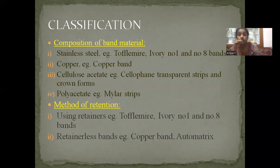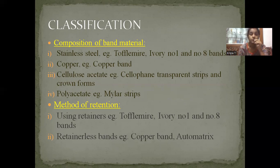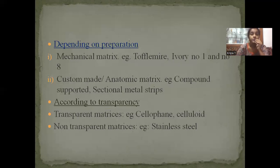They are classified based on the composition of band material: stainless steel, which is the matrix used with your Toffelmeyer retainer; ivory 1 and 8; copper in copper band; cellulose acetate in cellophane strips; polyacetate in mylar strips. Based on the method of retention — using retainers, or retainerless systems, which include copper band and auto matrix. Depending upon preparation, either it is mechanically readily available or you will have to custom make it as the anatomical matrix. According to transparency, you have transparent matrices and non-transparent ones — transparent for tooth-coloured restorations for proper curing, non-transparent for others.